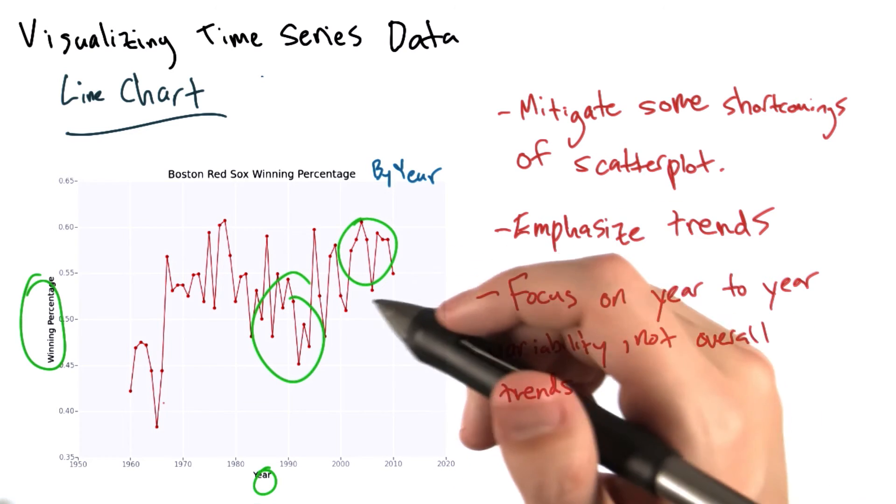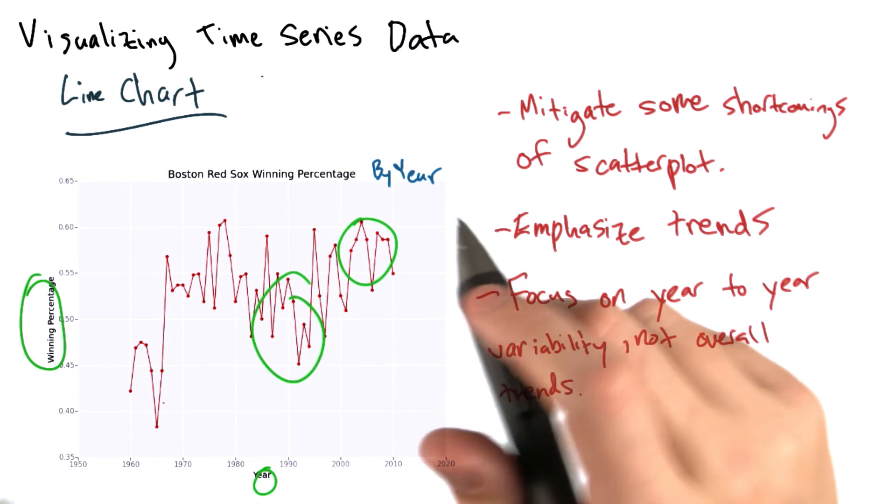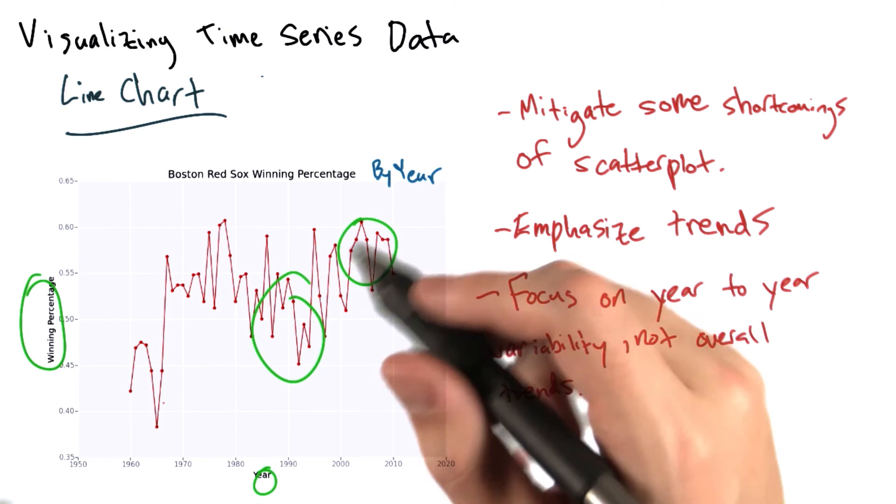Are the teams getting better or worse on average? For this reason, we might introduce a loess curve instead of these lines.